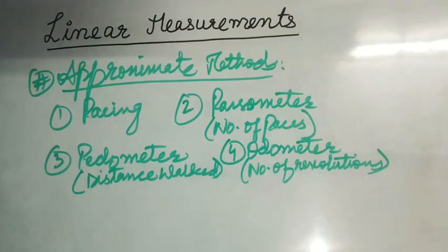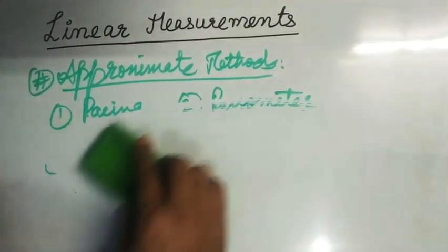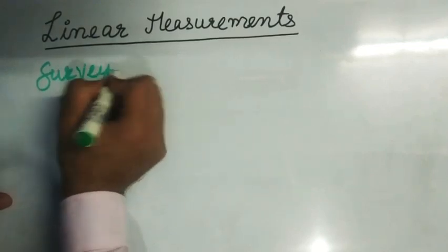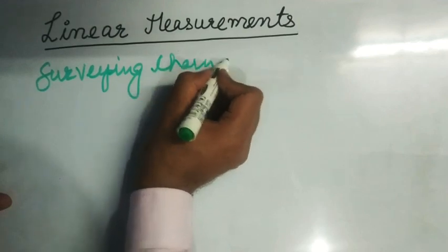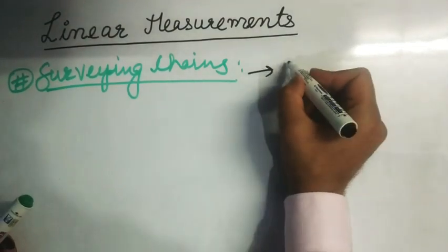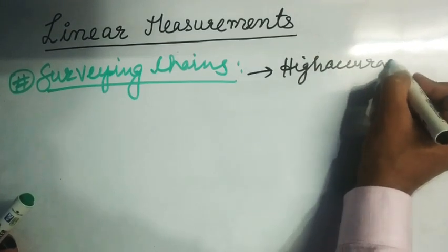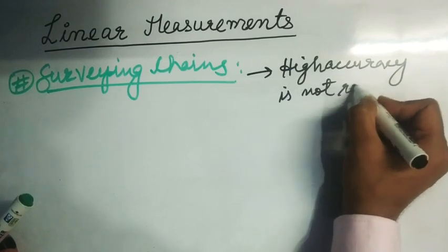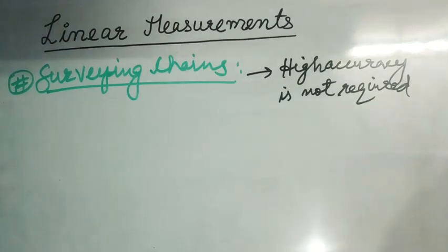Now we will start directly with surveying chains. Surveying chains are simply chains commonly used for measurement of distances where very high accuracy is not required. The chain usually consists of a number of large links made of galvanized mild steel wire of 4 mm diameter. Each end of the links is bent into a hoop. I will make a diagram of the chain.